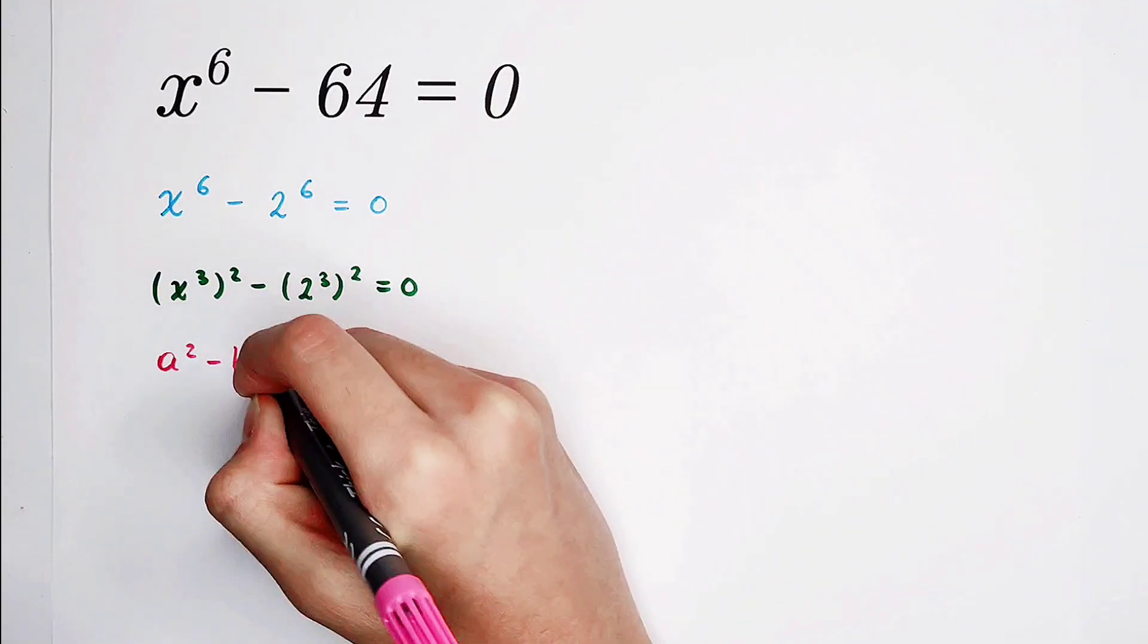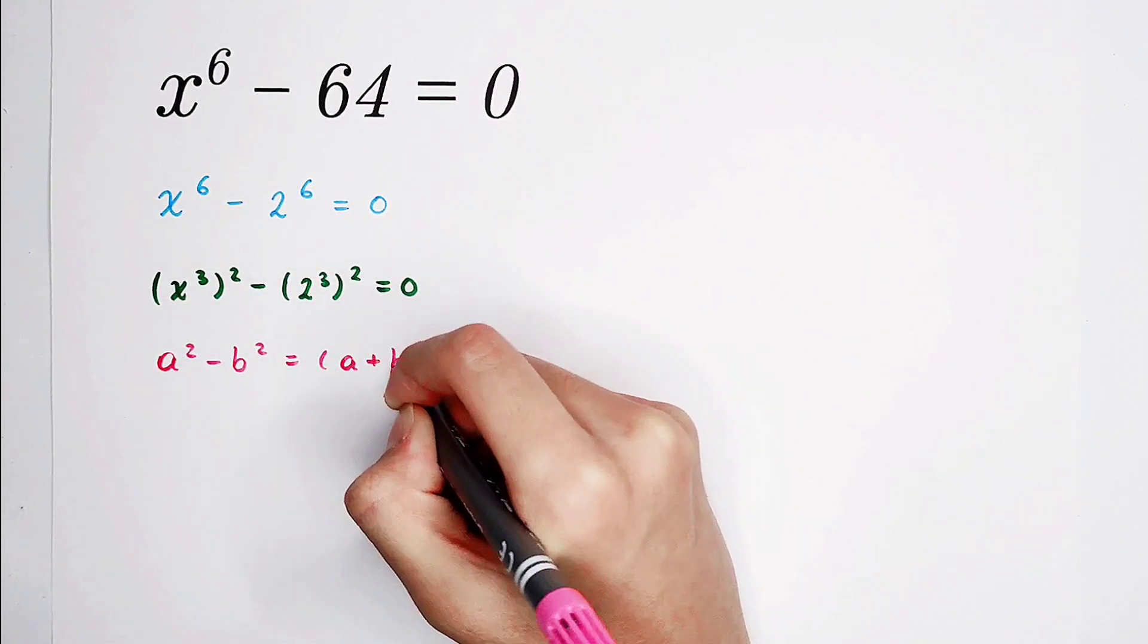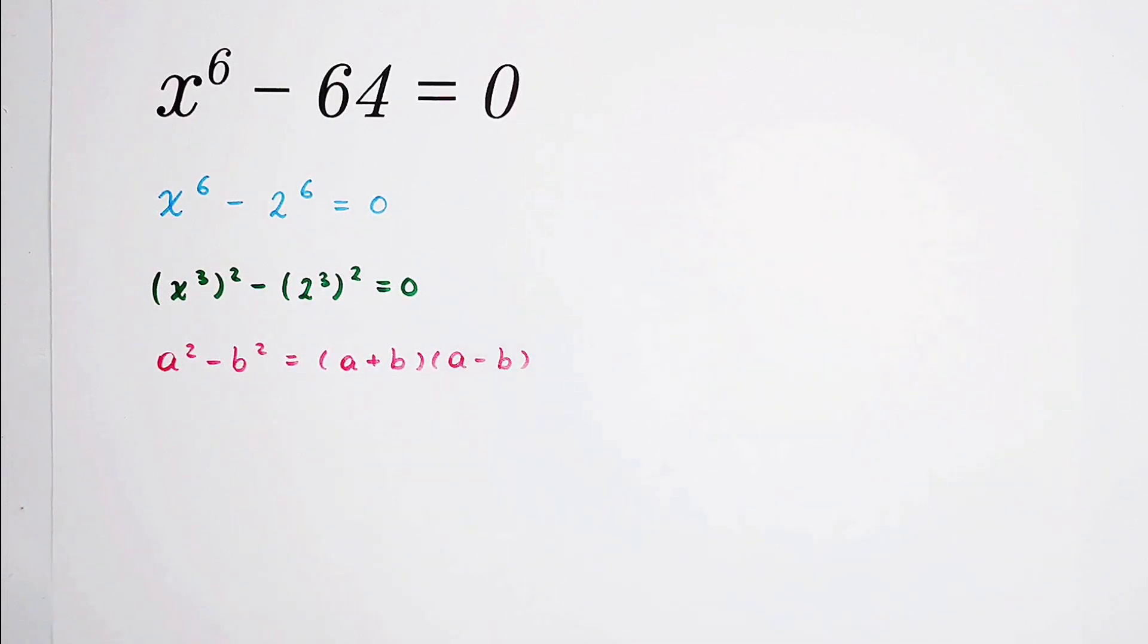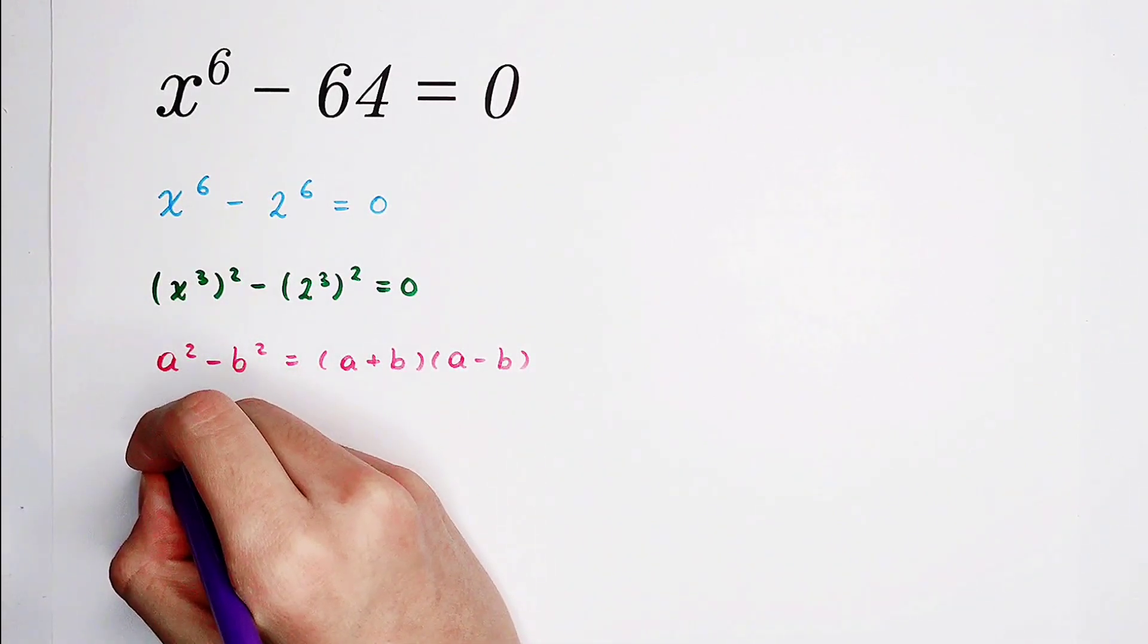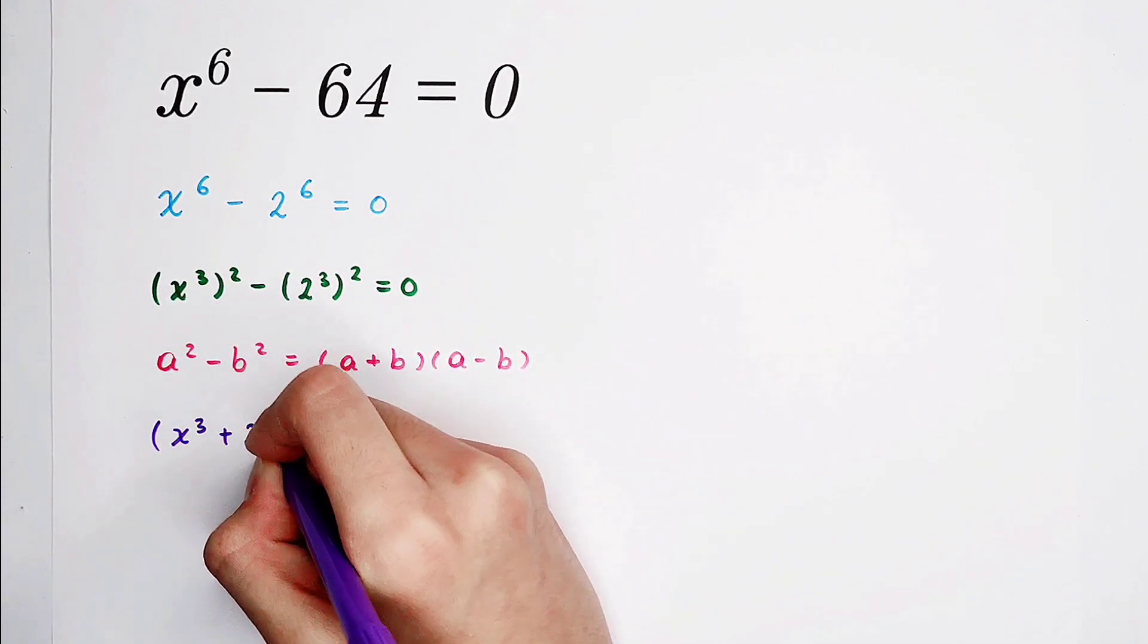a squared minus b squared equals a plus b times a minus b. The left hand side can be turned into a multiplication.